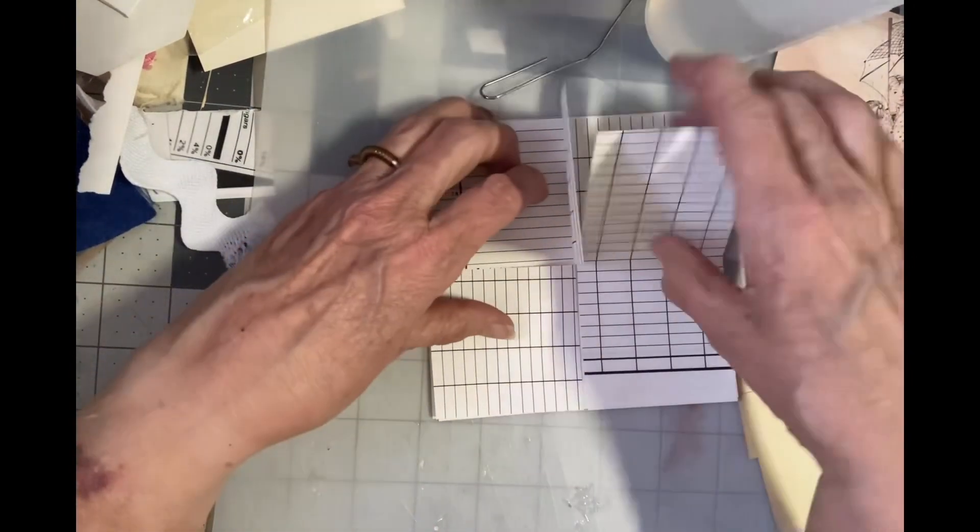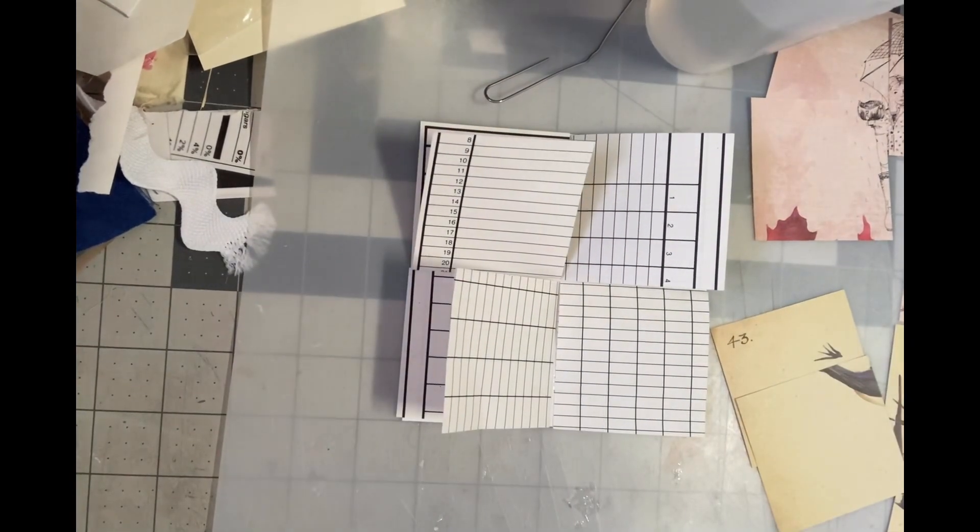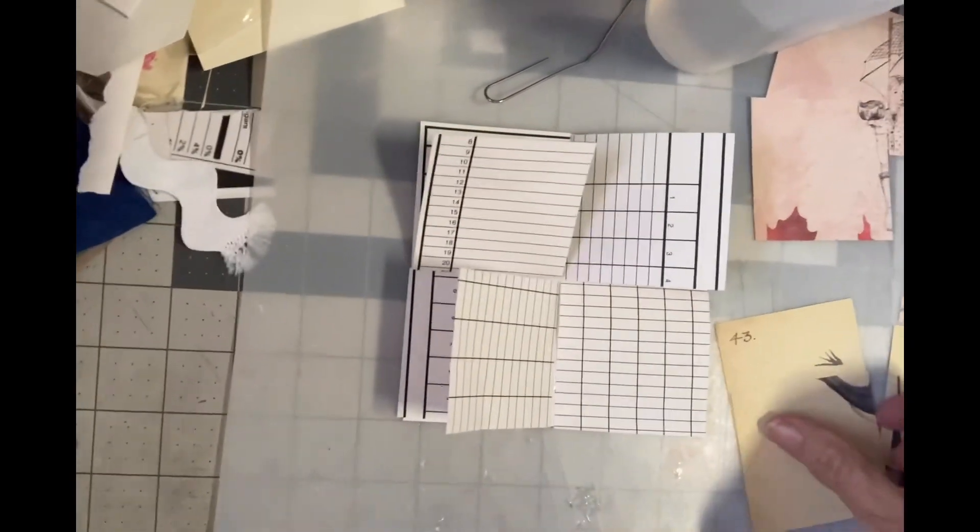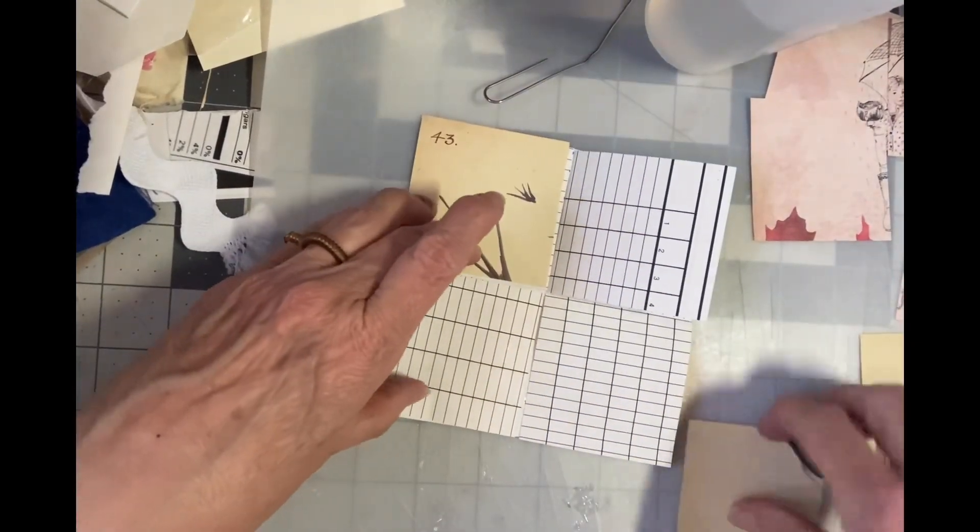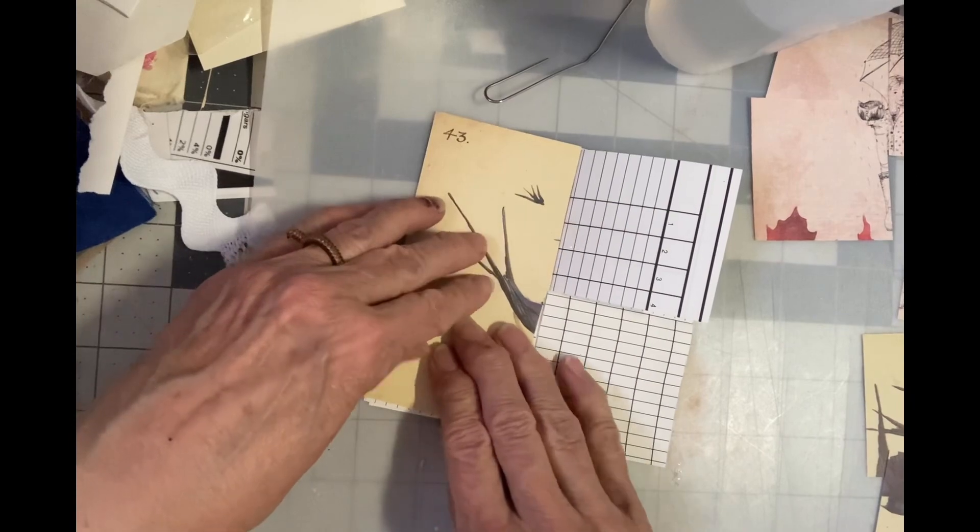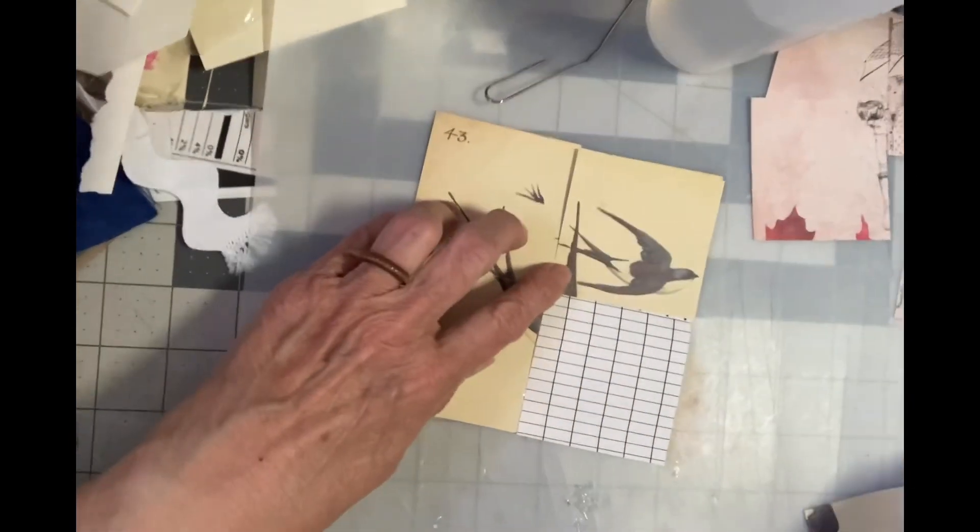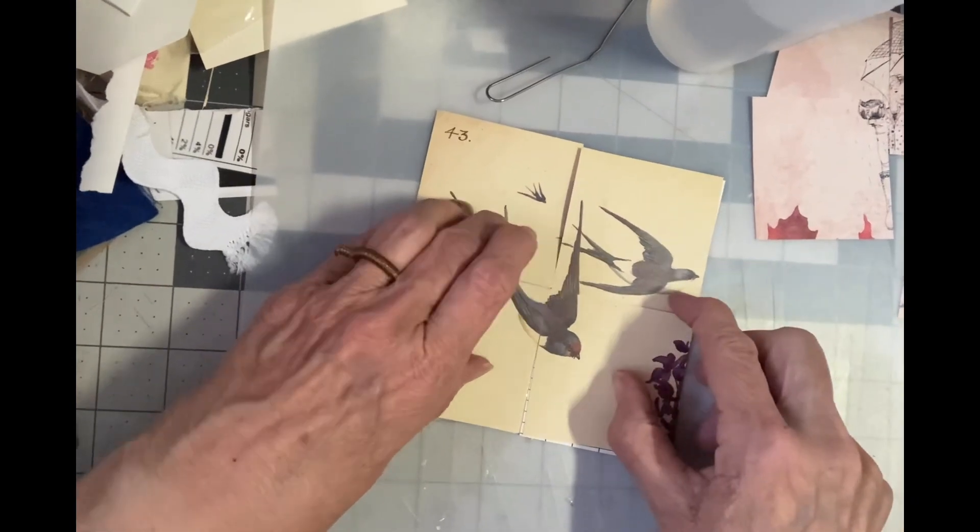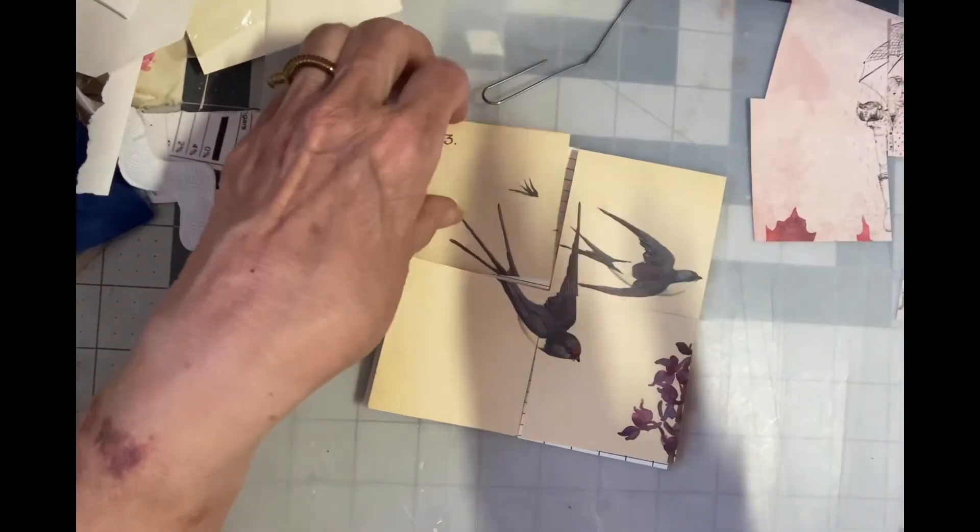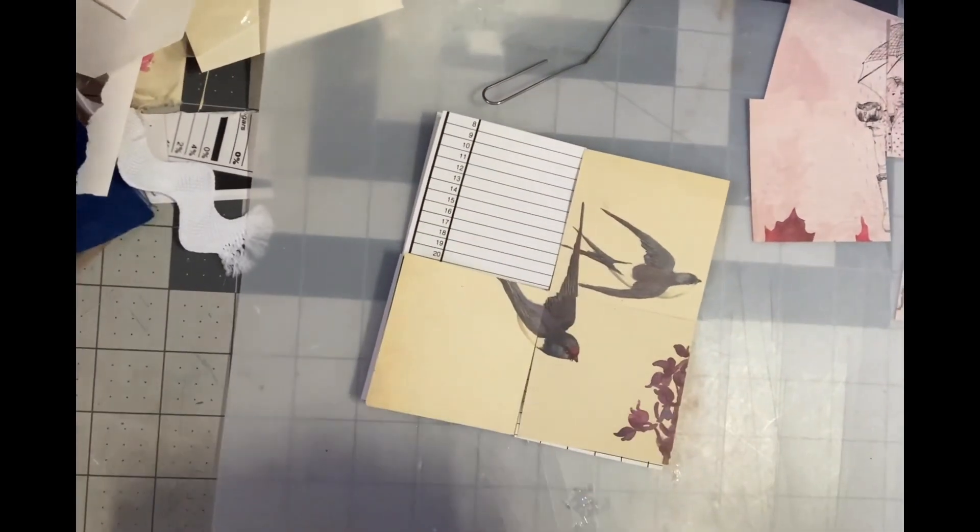So now we're going to go like this and now we want a picture to go on this. Now I'm going to put the Edith Holden pictures on here, and it's really important that the picture meets up and makes sense. So like this. So now let's start gluing these four down.